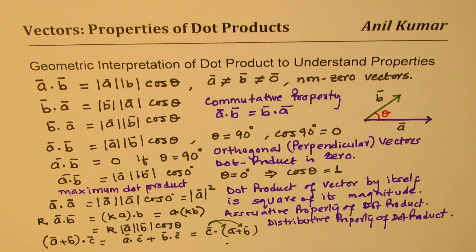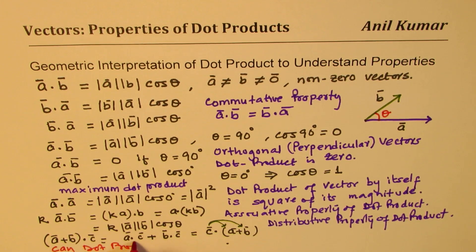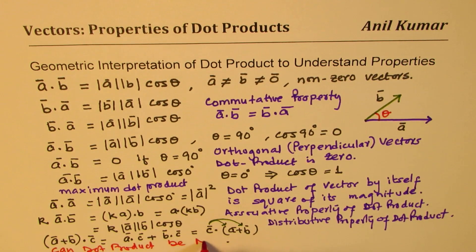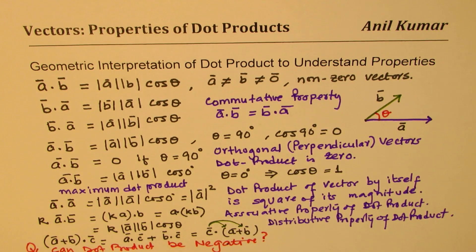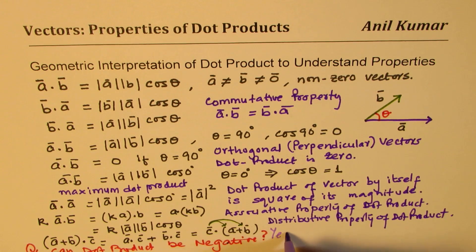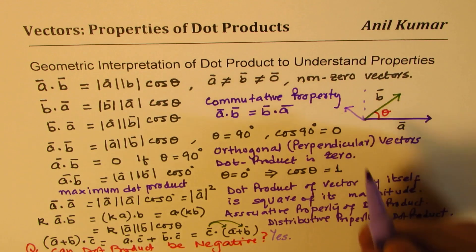These are the major properties of dot products which you have to keep in mind. Now, an interesting question: can the dot product be negative? The answer is yes. That will be the case when the angle is more than 90 degrees.